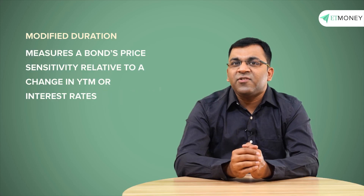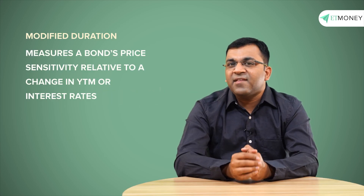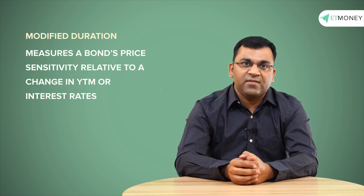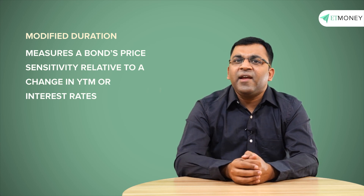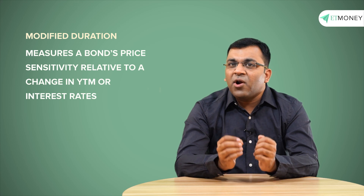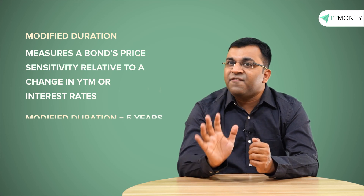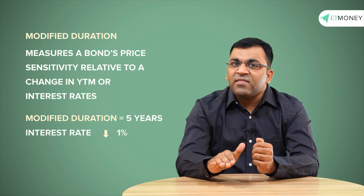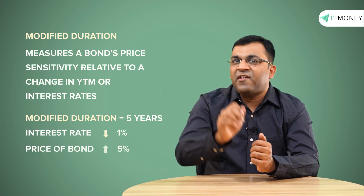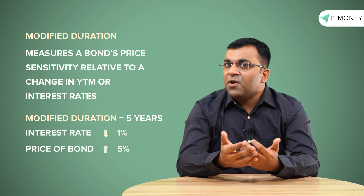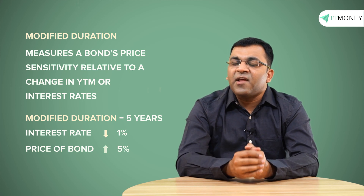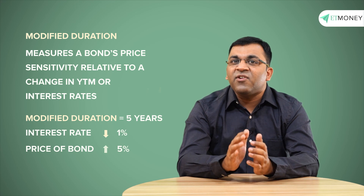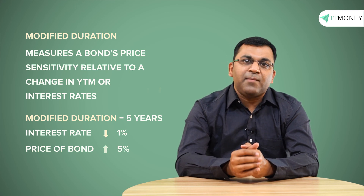The modified duration measures the bond's price sensitivity relative to a change in its yield to maturity or interest rates. Very simply, if the modified duration of a bond is 5 years and the interest rate goes down by 1%, then the bond's price will increase by 5%. Notice that when the interest rate goes down, bond prices go up — that happens because of the inverse relationship between interest rates and bonds. Similarly, if the interest rate had gone up by 1%, the price of the bond would have gone down by 5%.